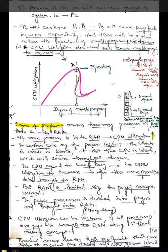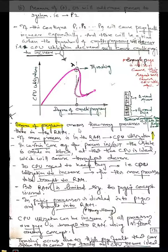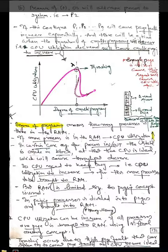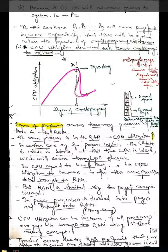The main cause is that the page search may not be able to identify the pages. Degree of multiprogramming means how many processes are in RAM. If the number increases, more processes are in RAM and CPU utilization increases, but after a certain point it decreases. In certain cases, the process state is made blocked, at which point the CPU is idle, causing throughput to decrease.